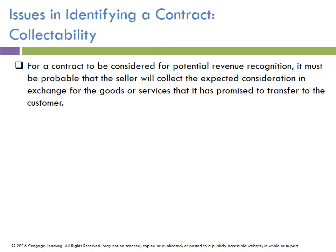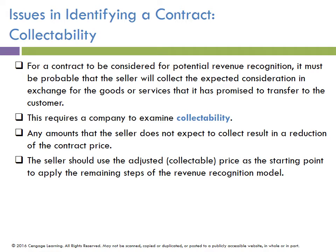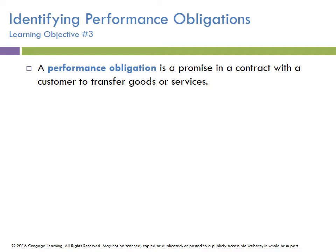The next issue relates to collectability. For a contract to be considered for revenue recognition, it must be probable that the seller will collect the money for those goods and services from the customer. Any amount that the seller does not expect to collect results in a reduction of the contract price. The seller should use the adjusted price as the starting point to apply the remaining steps of the revenue recognition model.